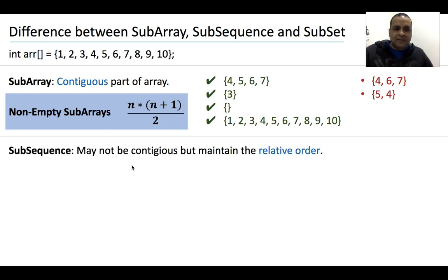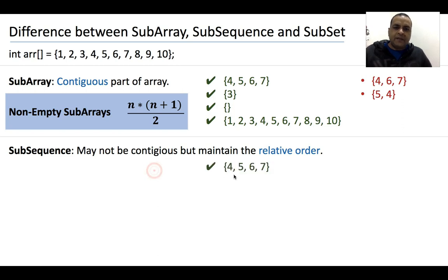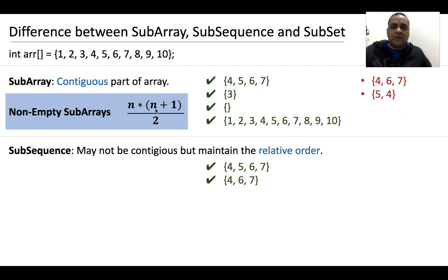Now let's come to subsequence. Elements in a subsequence appear in the same order as they appear in the original array — the only difference is that they may not be contiguous. For example, given the original array 1 through 10, then 4, 5, 6, 7 is a subsequence — it is also a subarray, but it is also a subsequence. 4, 6, 7 is not a subarray but it is a subsequence of the original array, because 4, 6, and 7 appear in the same relative order. In the original array, 4 comes first, then 6, then 7. There may be more elements between them, but their relative order is preserved.